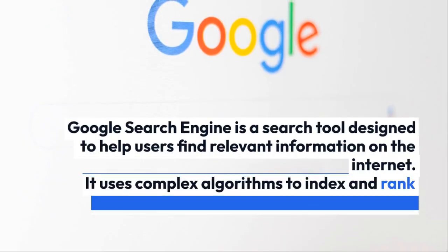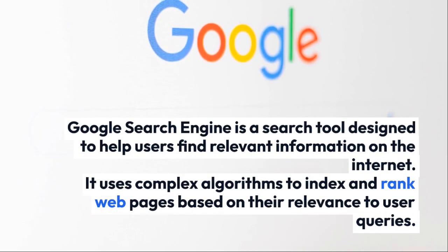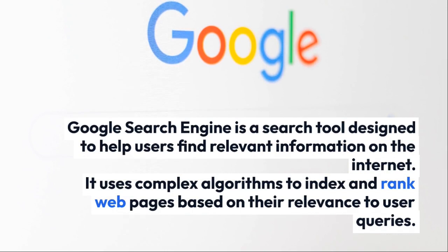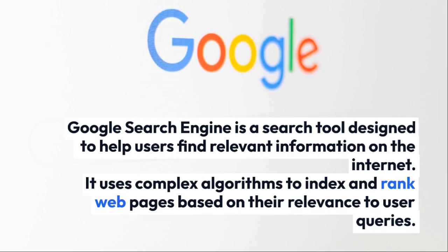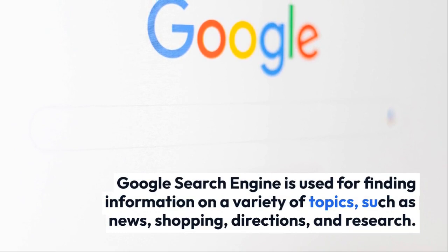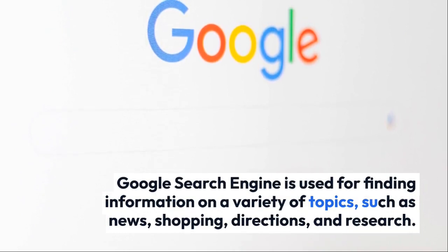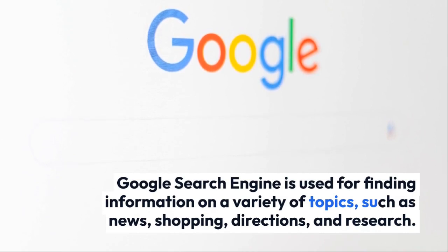Google search engine is used to find information on a variety of topics such as news, shopping, directions, and research — things ChatGPT can't help you with the way Google Maps, YouTube, or Amazon can. ChatGPT only helps like a chatbot. While both technologies involve processing natural language, they serve different purposes: ChatGPT is used for generating text responses and having conversations, while Google search engine is used to find information on the internet.